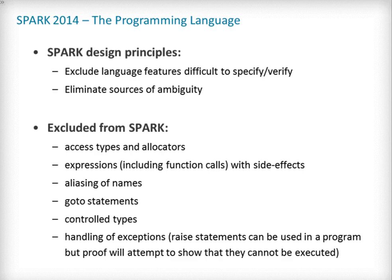It helps to understand the rationale behind the differences between Spark and ADA languages. The aim while designing the Spark subset of ADA was to create the biggest possible subset still amenable to easy specification and sound verification. The most notable exclusions include access types and allocators, as well as the handling of exceptions, which are both known to increase considerably the amount of required user-written annotations. Goto statements and controlled types are also unsupported, as they introduce non-trivial control flow. The two remaining restrictions are side effects in expressions and the aliasing of names.